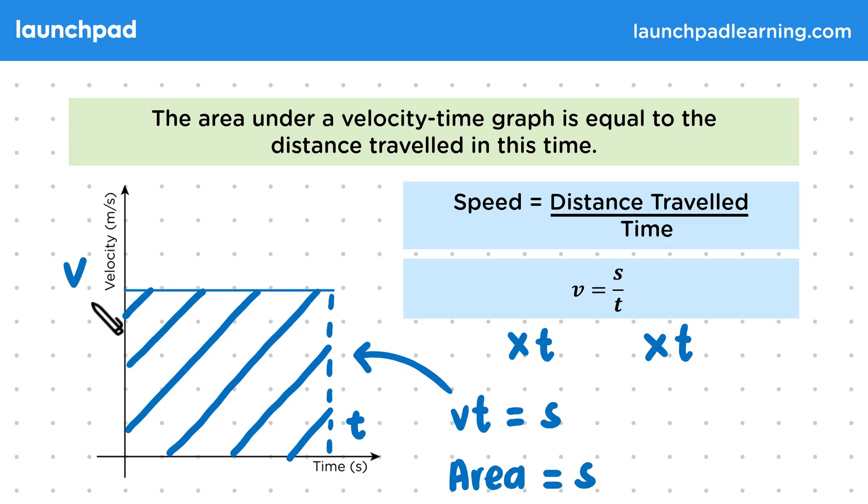In general though, the velocity would be changing. Finding the area is a special way of multiplying velocity by time while taking this into account. You definitely don't need to understand how that works at GCSE, but you should at least have a basic understanding of why there is some relation between area and distance. Namely, that we're sort of doing velocity multiplied by time, like in the equation.